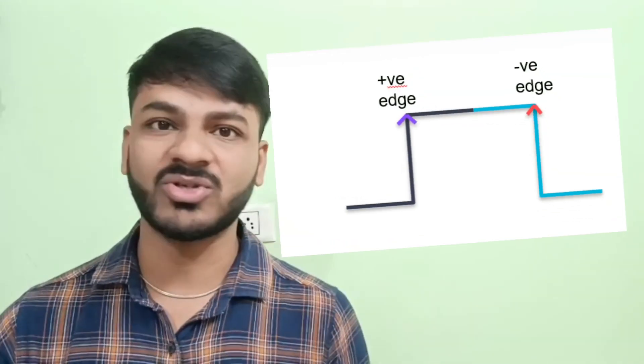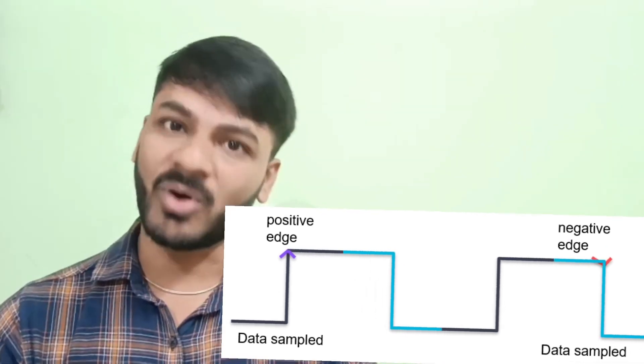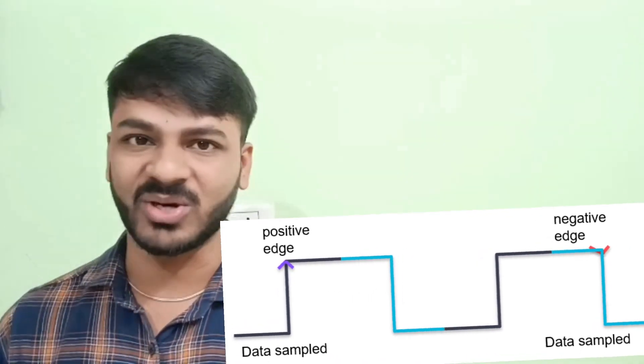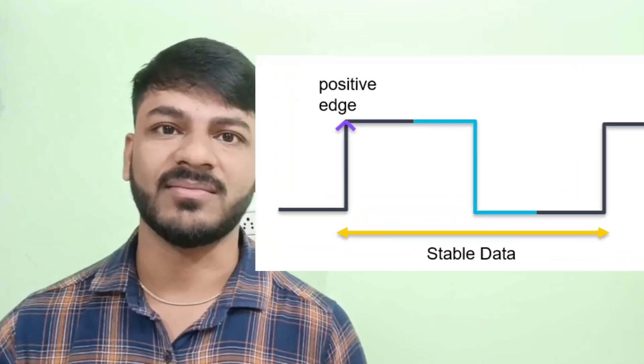The flip-flop can be switched based on the input signals. Most of the time, flip-flops are sensitive to the active edge of the clock, meaning that during one clock period, data is sampled either on the positive edge or the negative edge. The main advantage of a flip-flop is that the data is stable for one clock time. There are different types of flip-flops in digital electronics: SR flip-flop, D flip-flop, T flip-flop, and JK flip-flop.